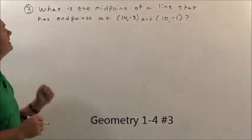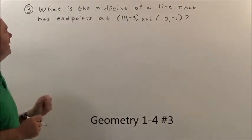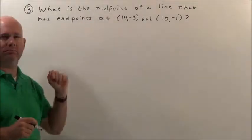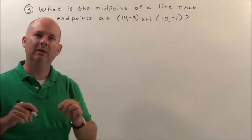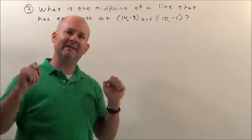Problem 3. It says, what is the midpoint of a line that has endpoints at (14,3) and (10,-1)? Midpoint. It's the middle point. Between any two points, we just want to find the dead middle.